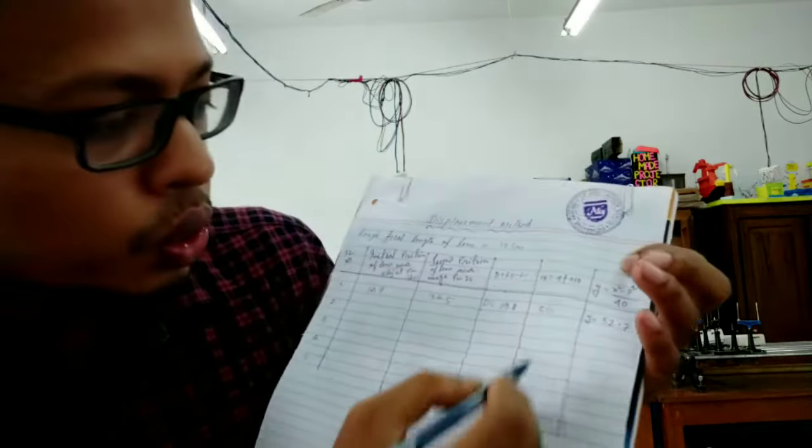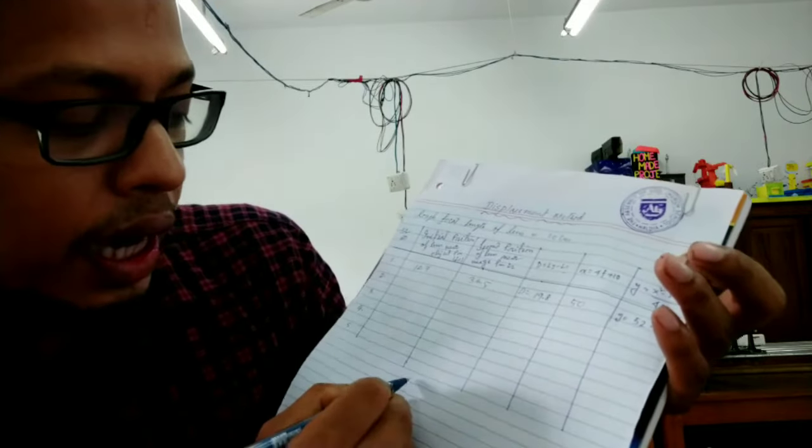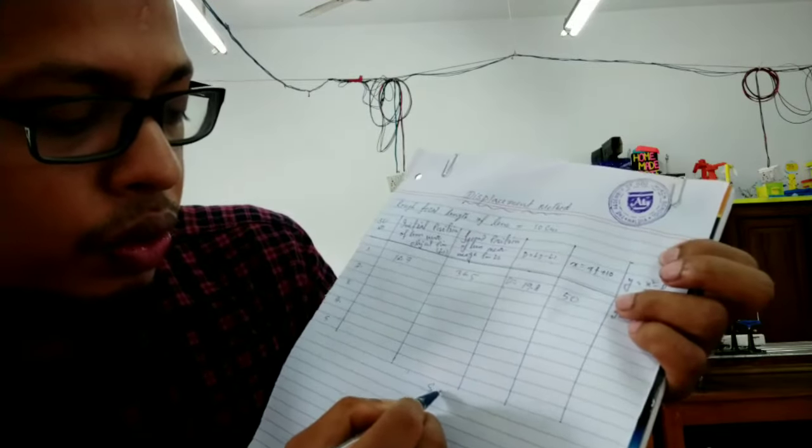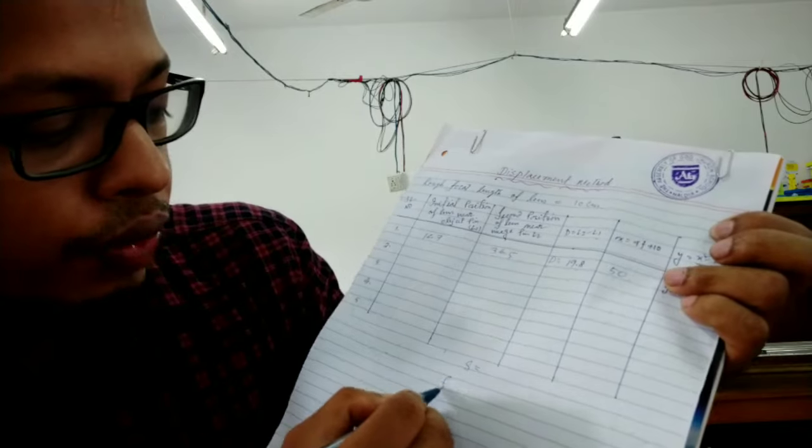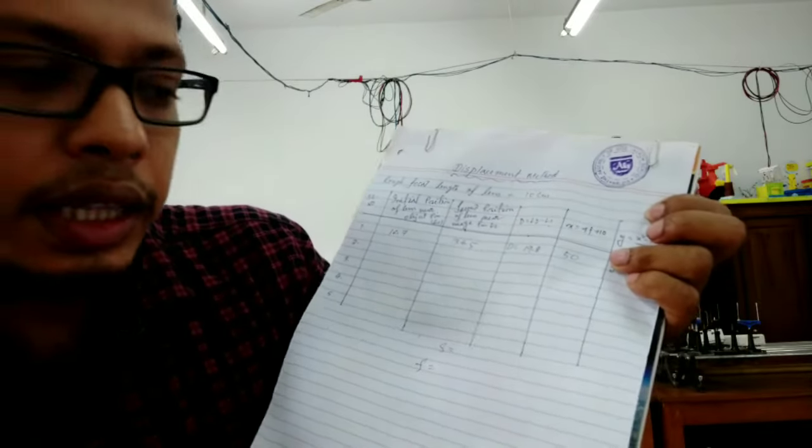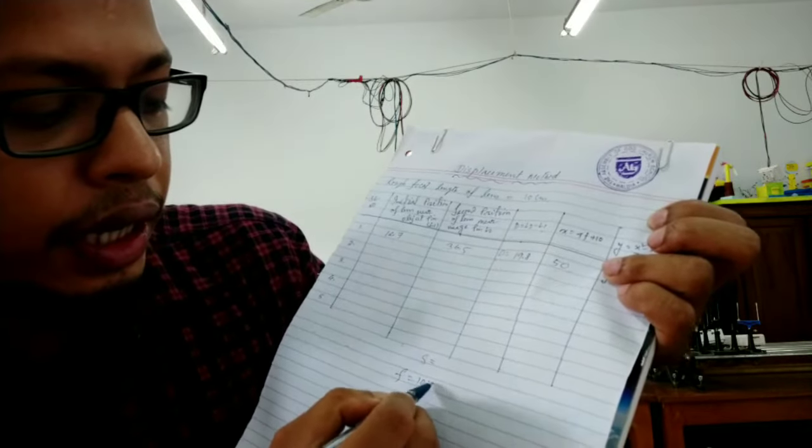So after that you plot the graph, then find the slope. Slope will come. Then formula for focal length is F equals to 10 into S.